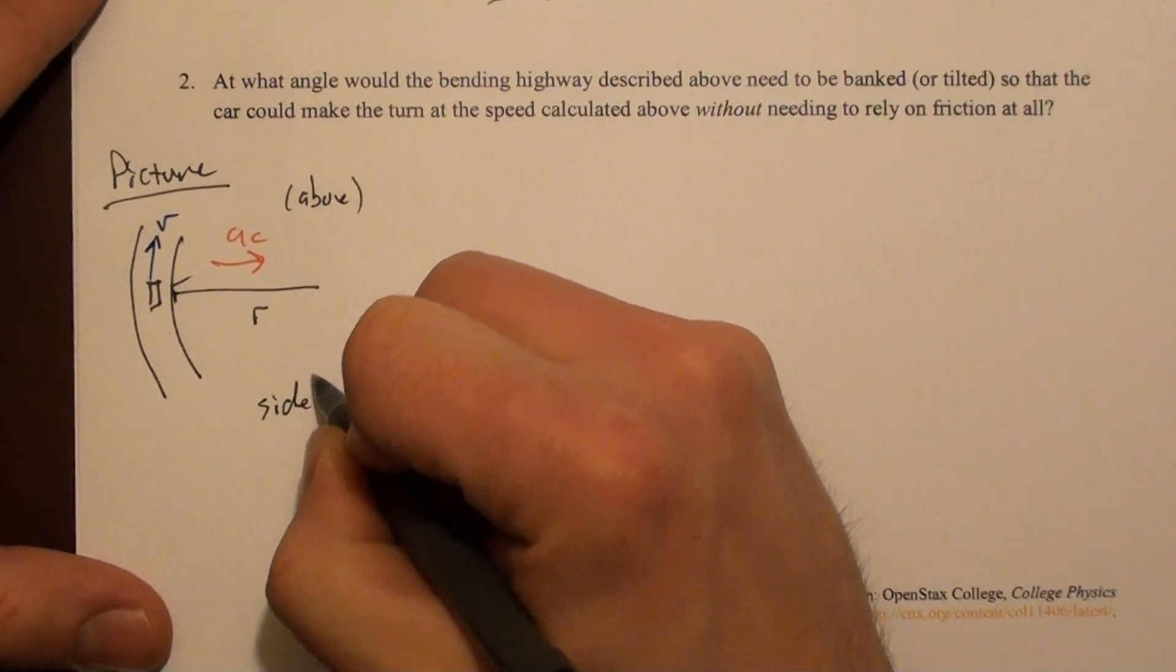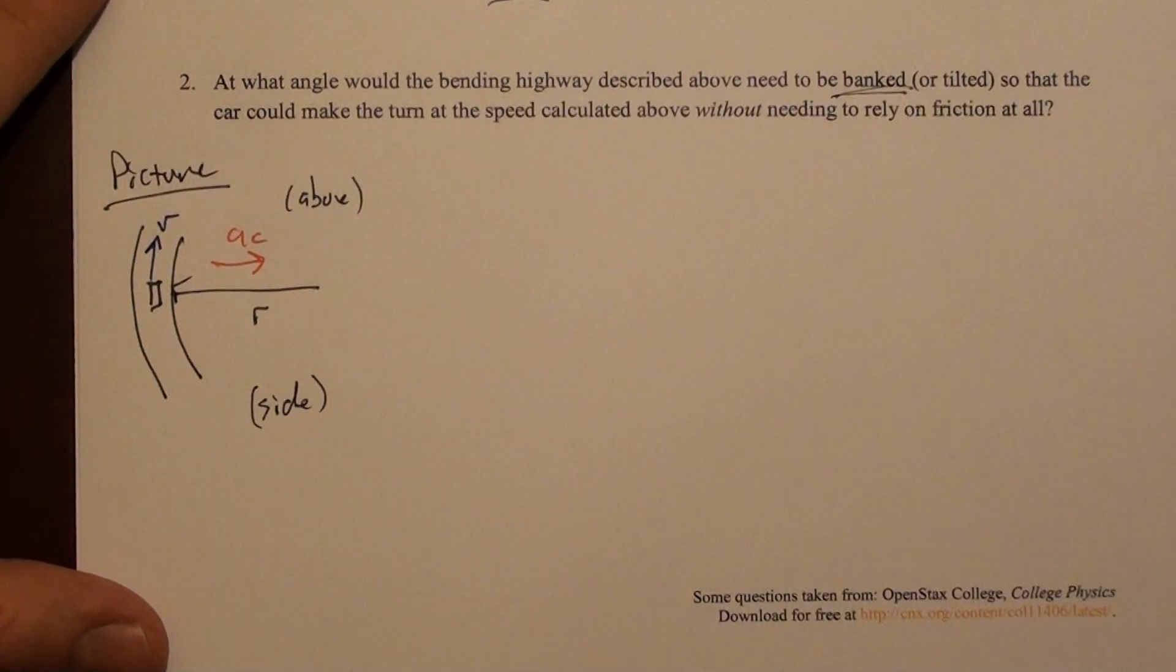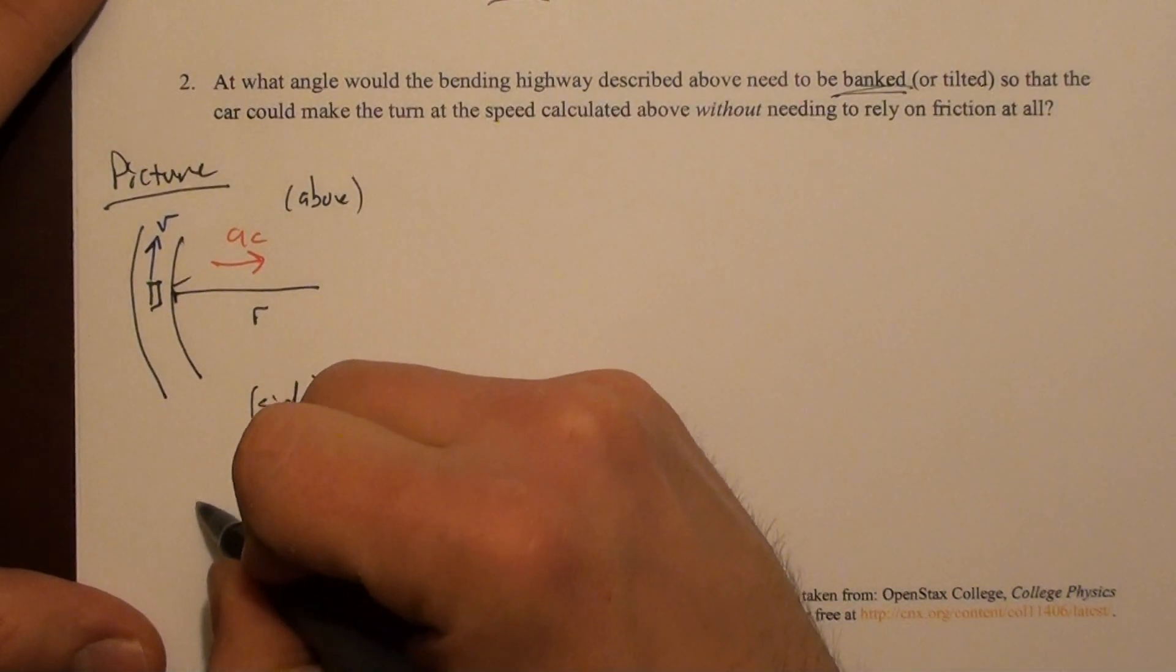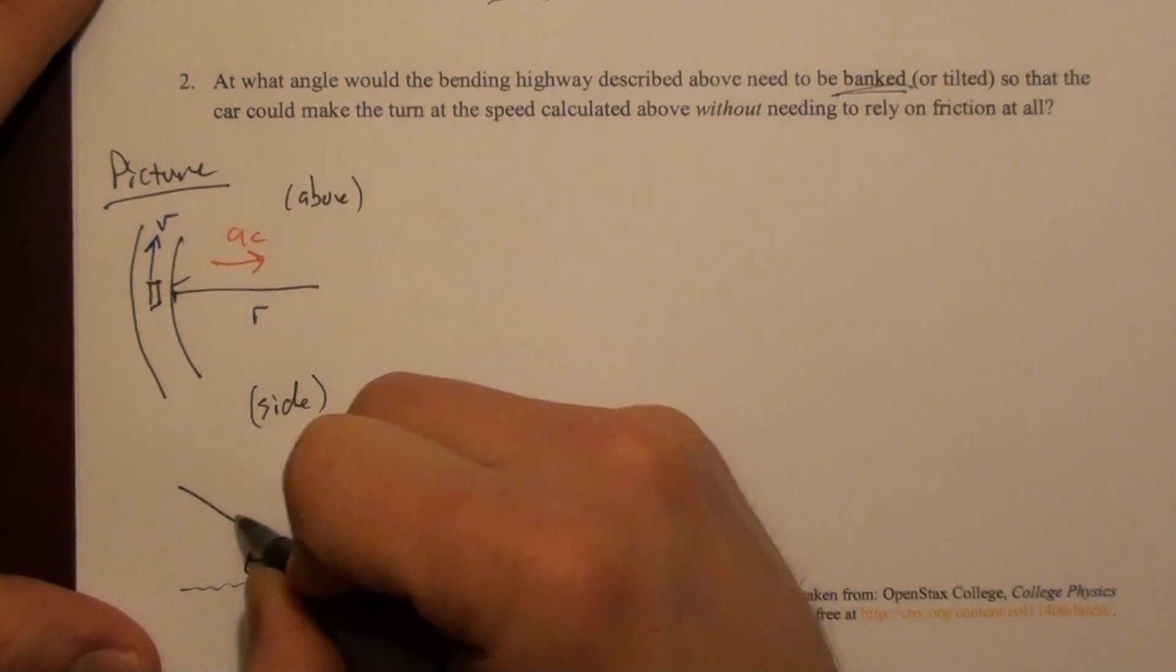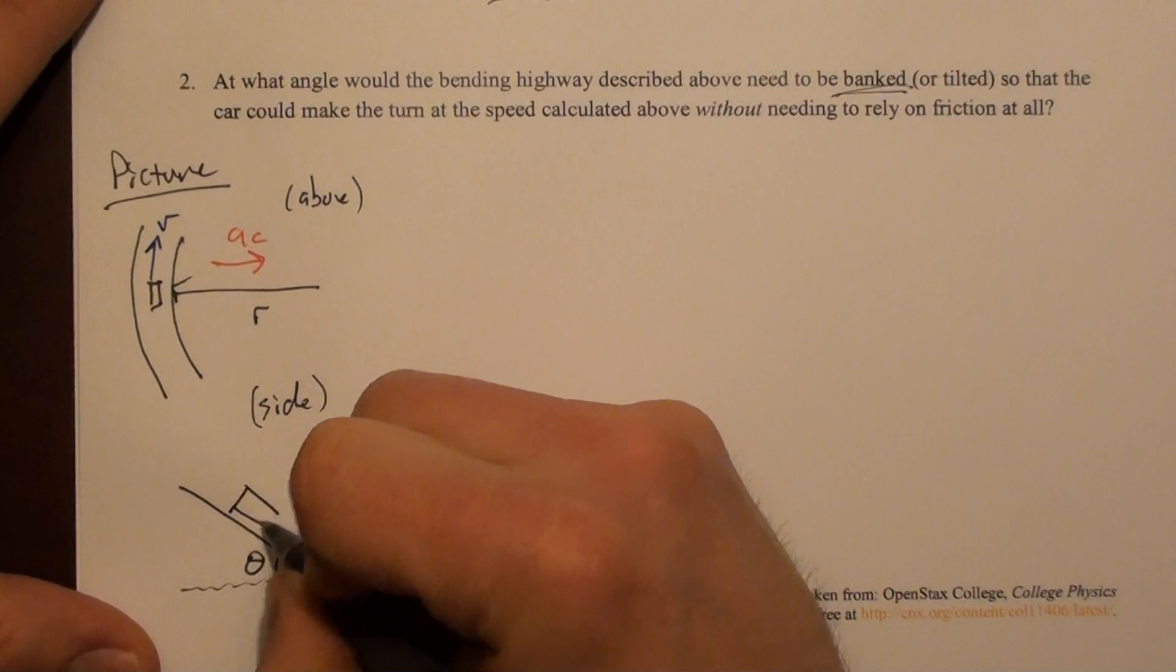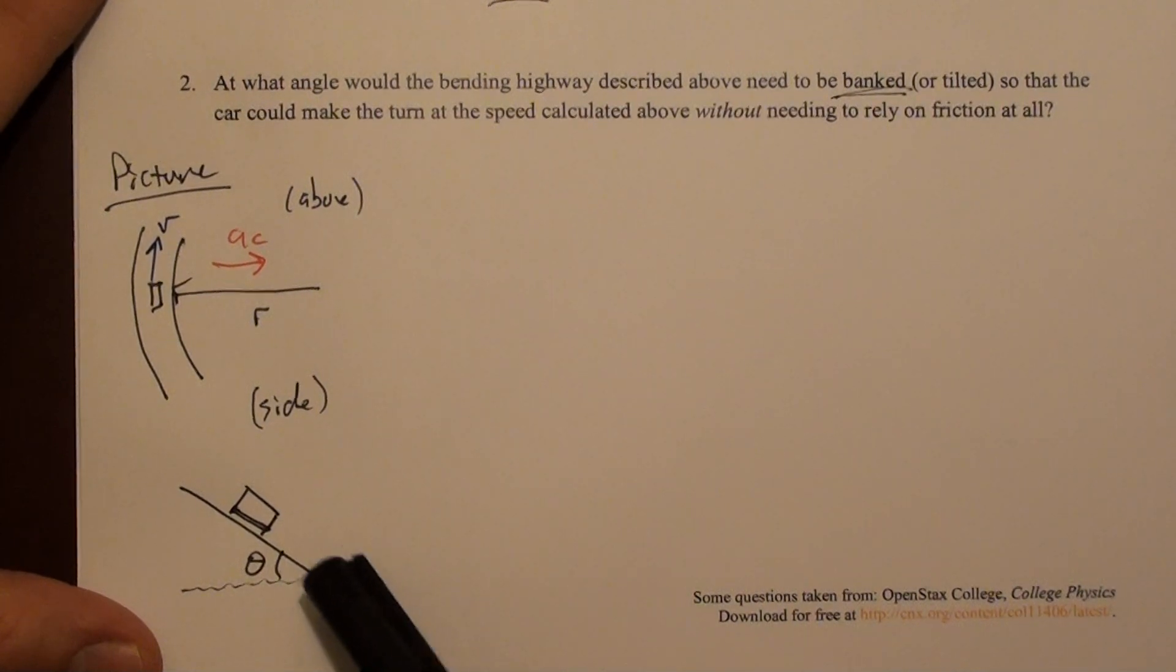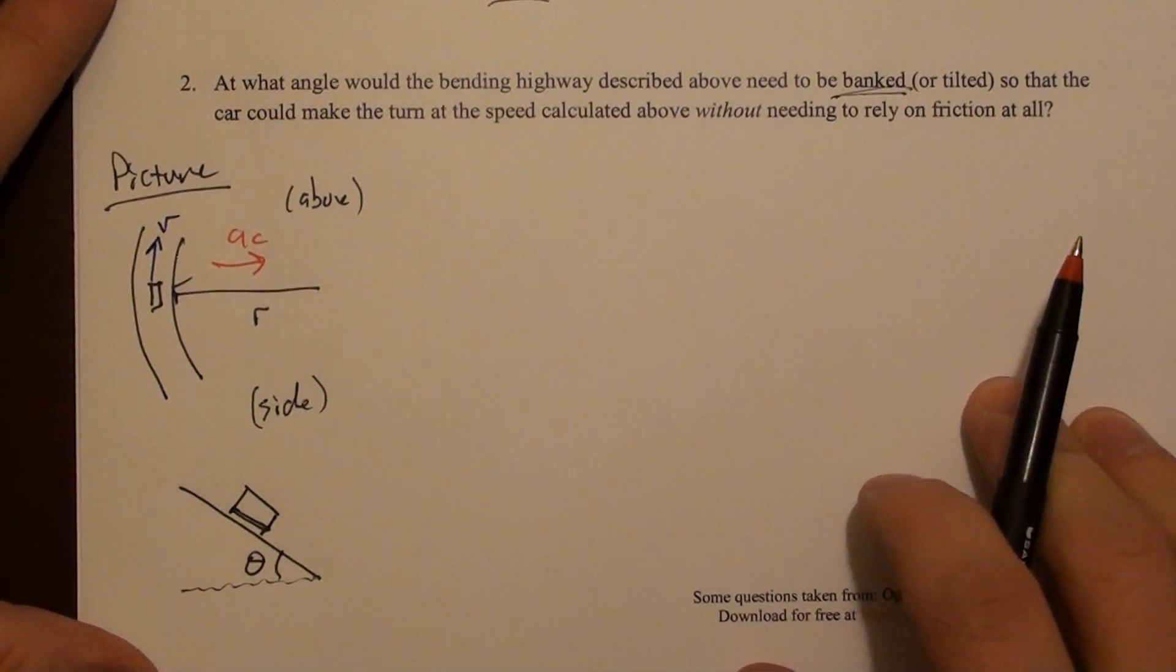Our picture from the side, however, is a little different. This is a banked highway. What we mean by banked is that the road tilts this way at some angle θ. And you can put your car on this road.